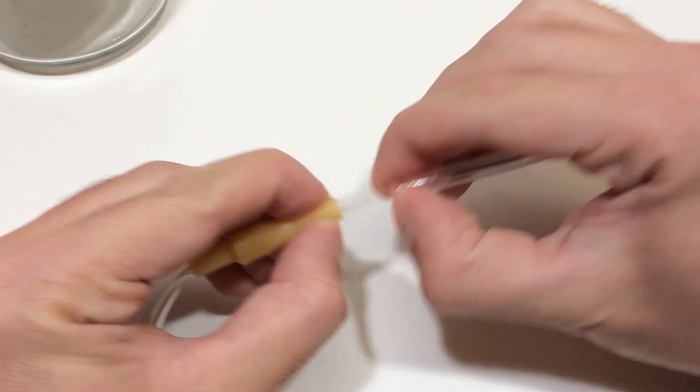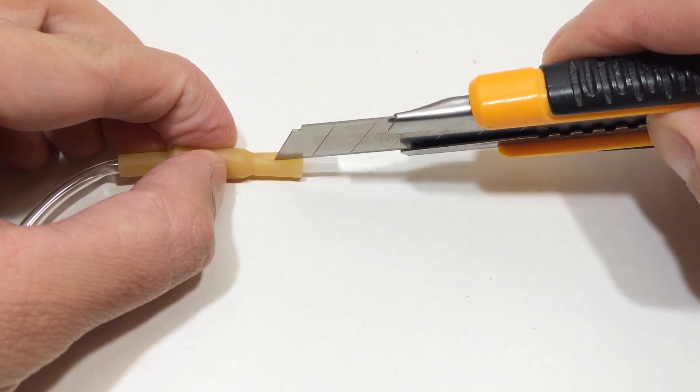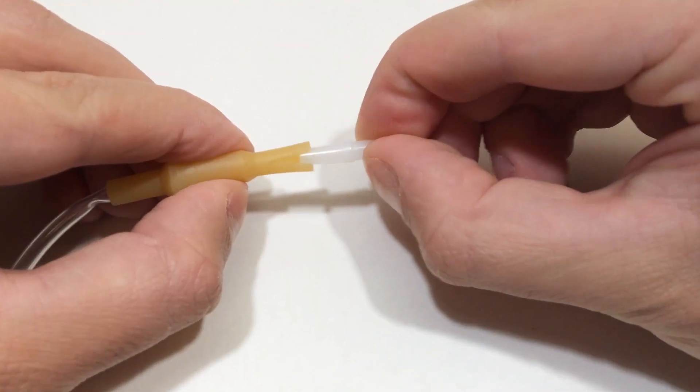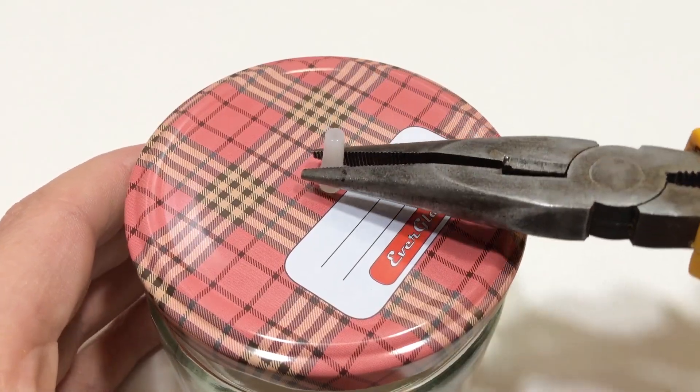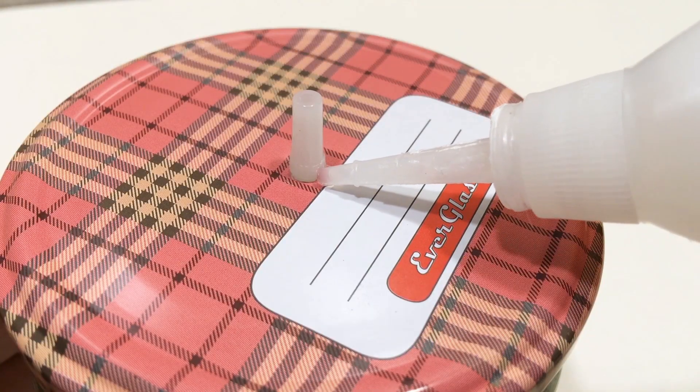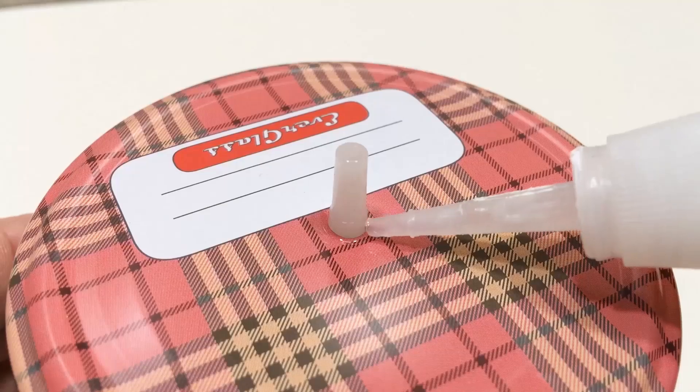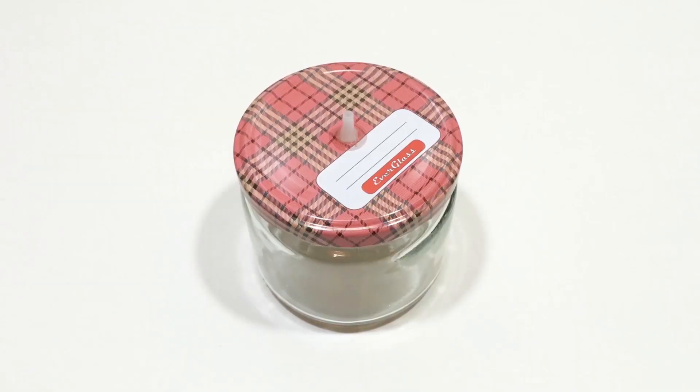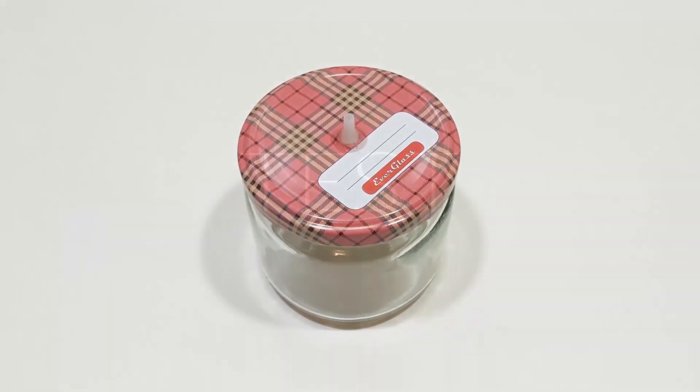Then grab the connector piece from the IV set and push it into the hole. And just like that, the vacuum chamber is done.